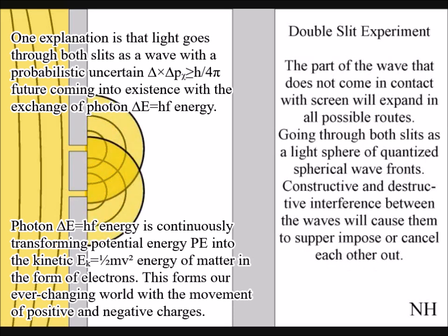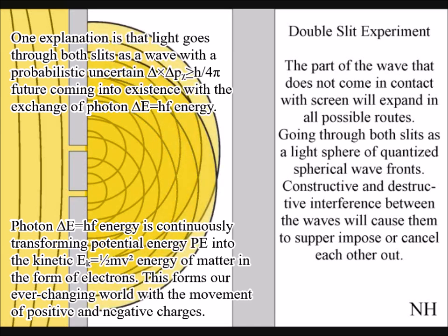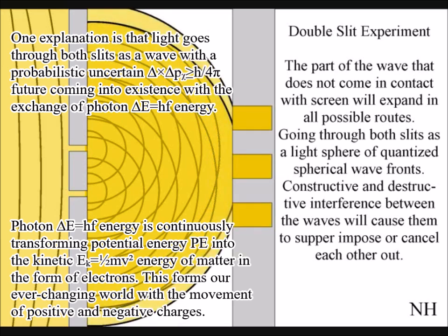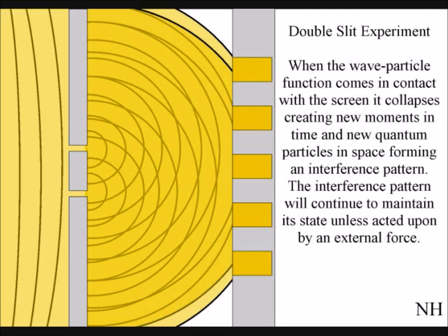The light waves that do not come in contact with the plate will go through both slits. The waves will then form constructive and destructive interference over a period of time. And an interference pattern will build up on the screen photon by photon, continuing as time unfolds within the isolated reference frame of the experiment.